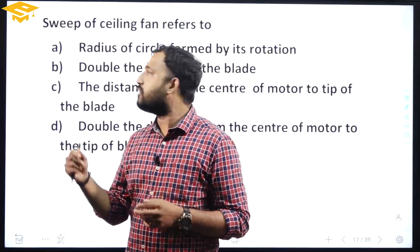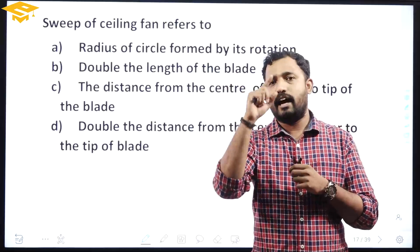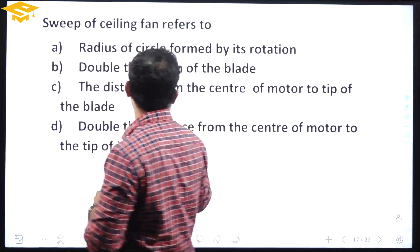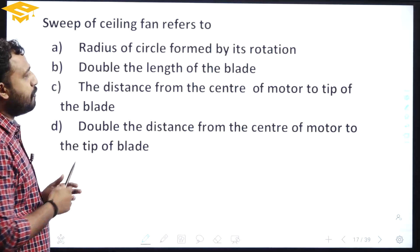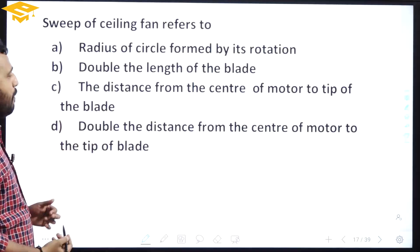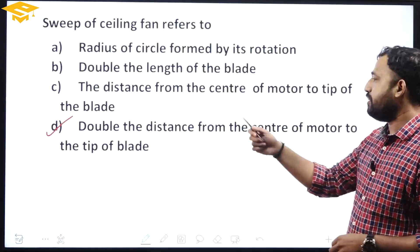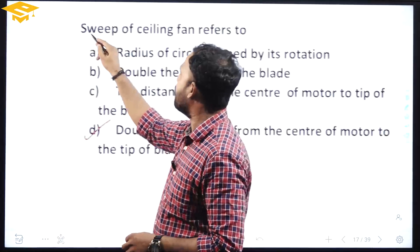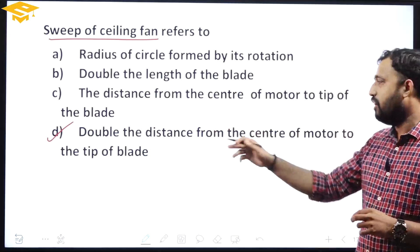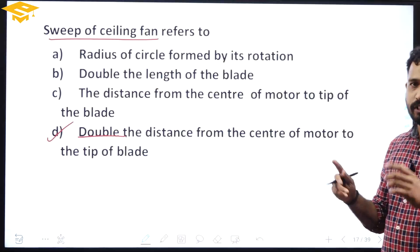Sweep of a ceiling fan refers to: radius of the circle formed by its rotation, double the length of the blade, distance from the centre of the motor to the tip of the blade, or double the distance from the centre of the motor to the tip of the blade. The answer is double the distance from the centre of the motor to the tip of the blade. Please remember this.